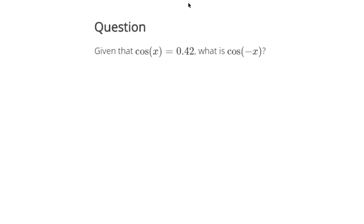Okay, so given that cosine of x equals 0.42, we're supposed to say what cosine of negative x is.